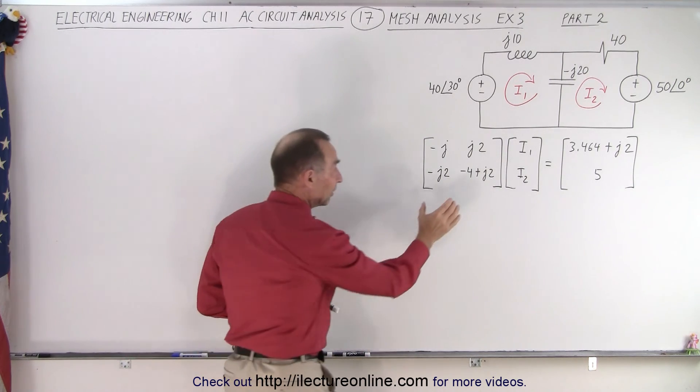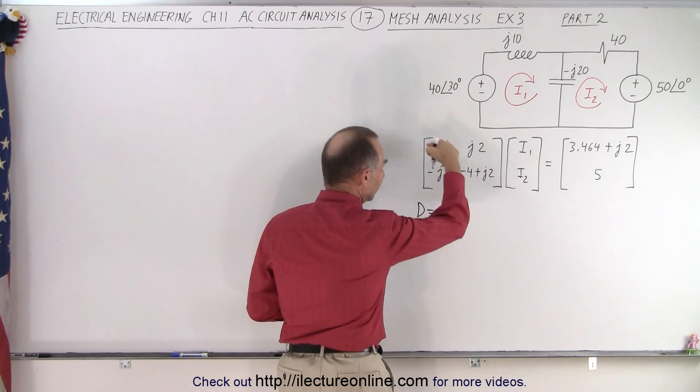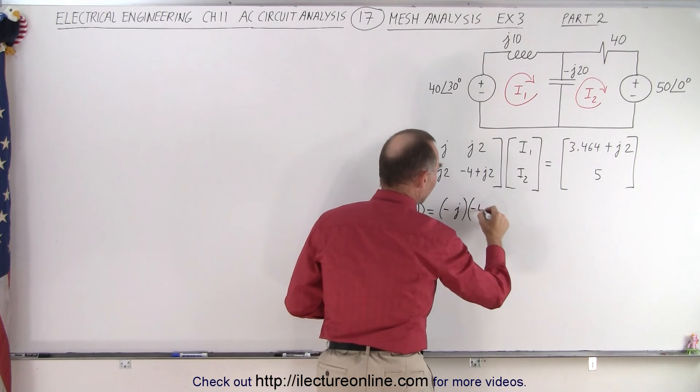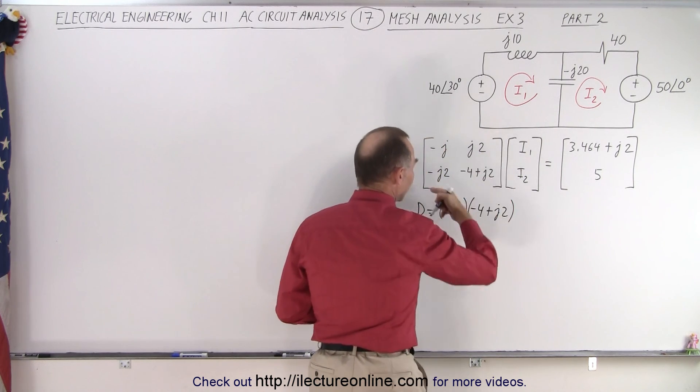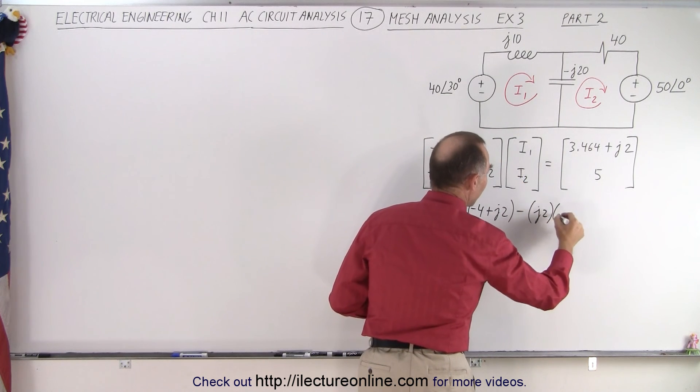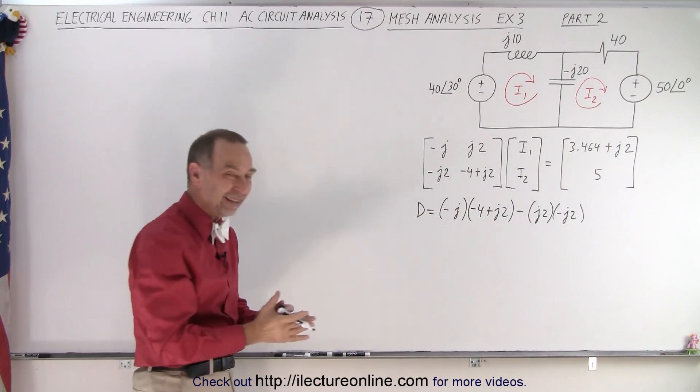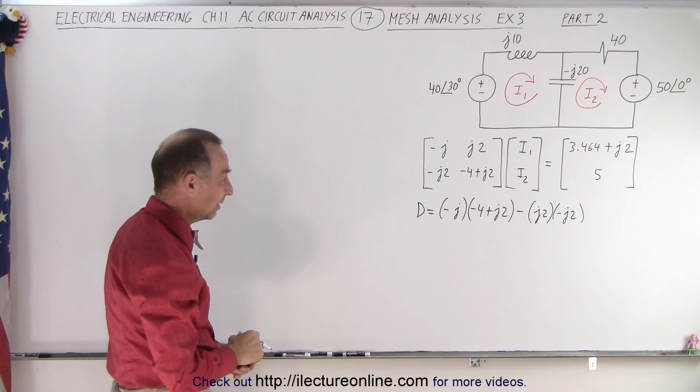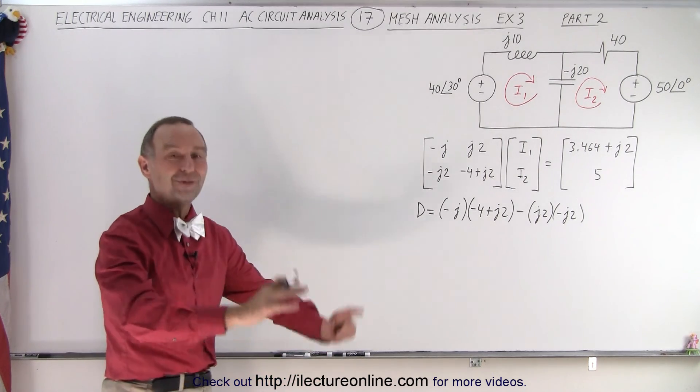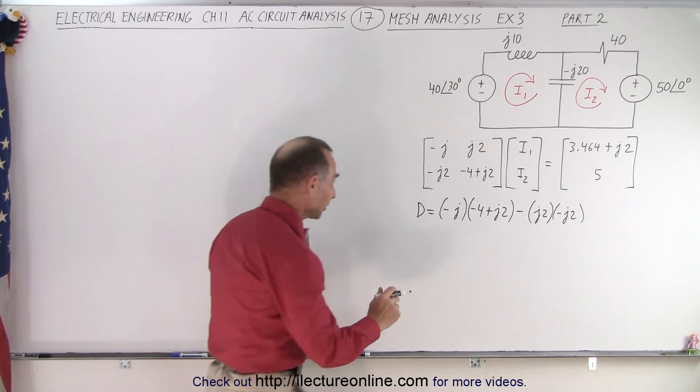So the first thing we need to do is find the value of the determinant. So in this case, the determinant is equal to the product of these two, which is minus J multiplied times minus 4 plus J2 and subtract from that J2 times minus J2. And notice again how I write down all the negative signs with parentheses just to reduce the probability of making a mistake. Alright, so let's go ahead and work that out.